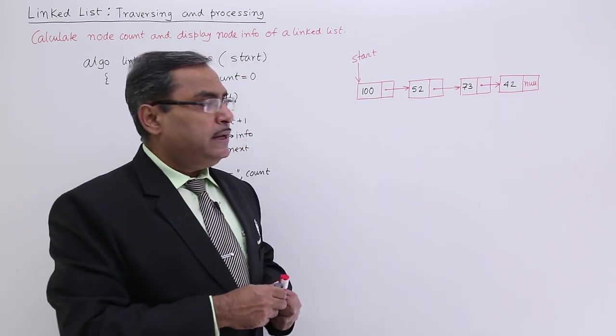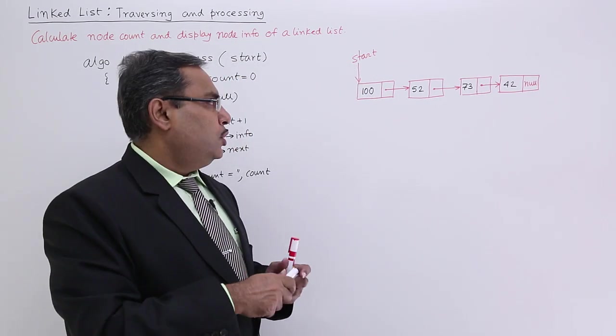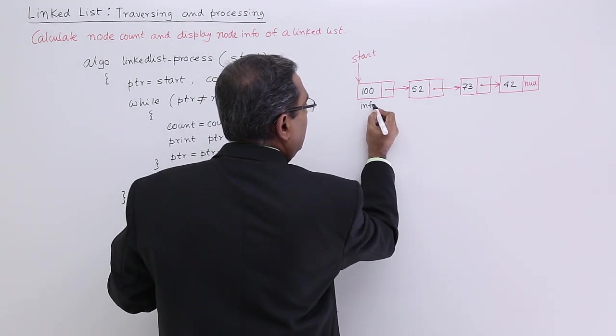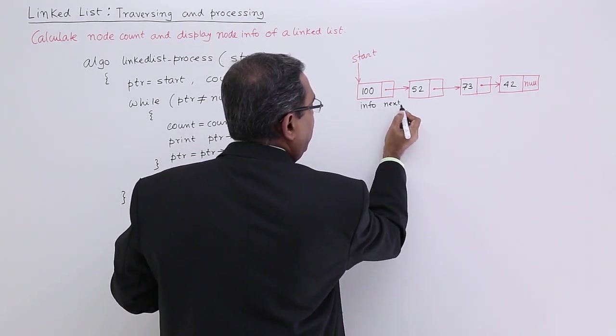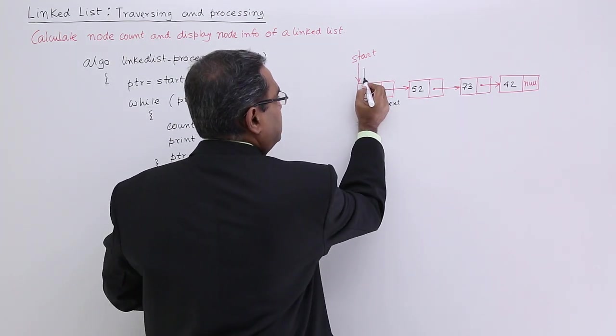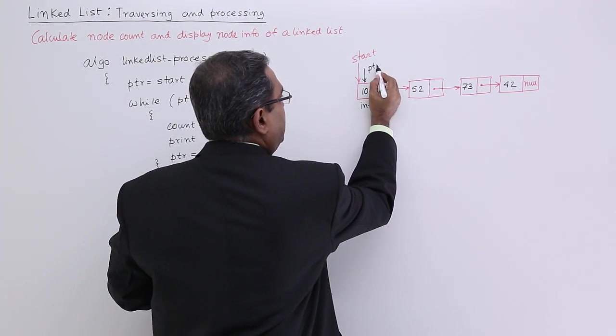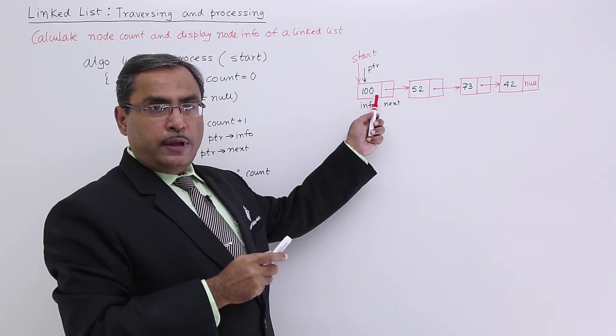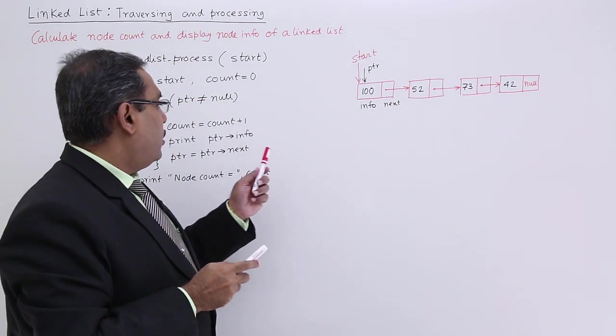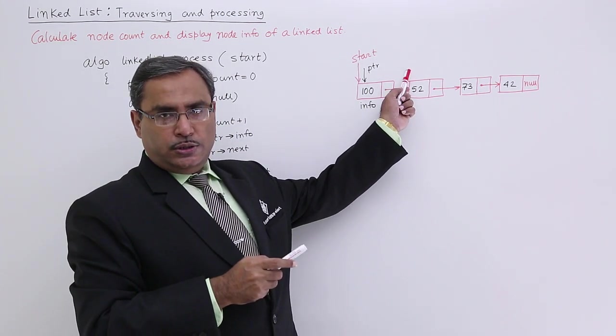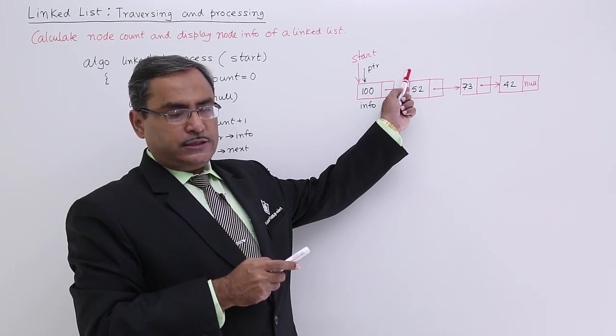Let us suppose this is my linked list, a sample linked list. Obviously this is my info and this is my next. PTR is also pointing to the same node because PTR is equal to start. So it will print this particular info and PTR is equal to link of PTR or PTR is equal to PTR next will go to the next node's address.